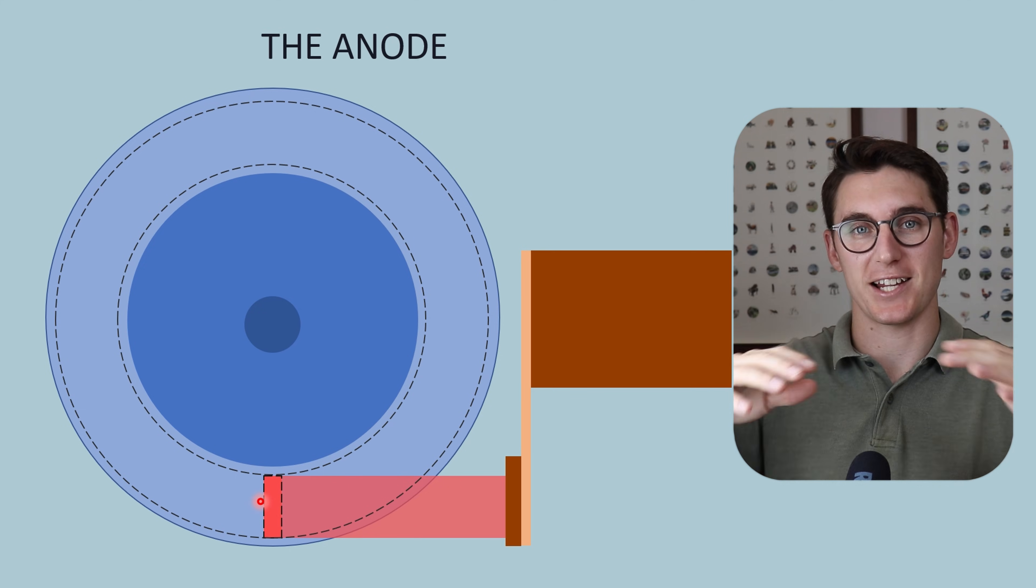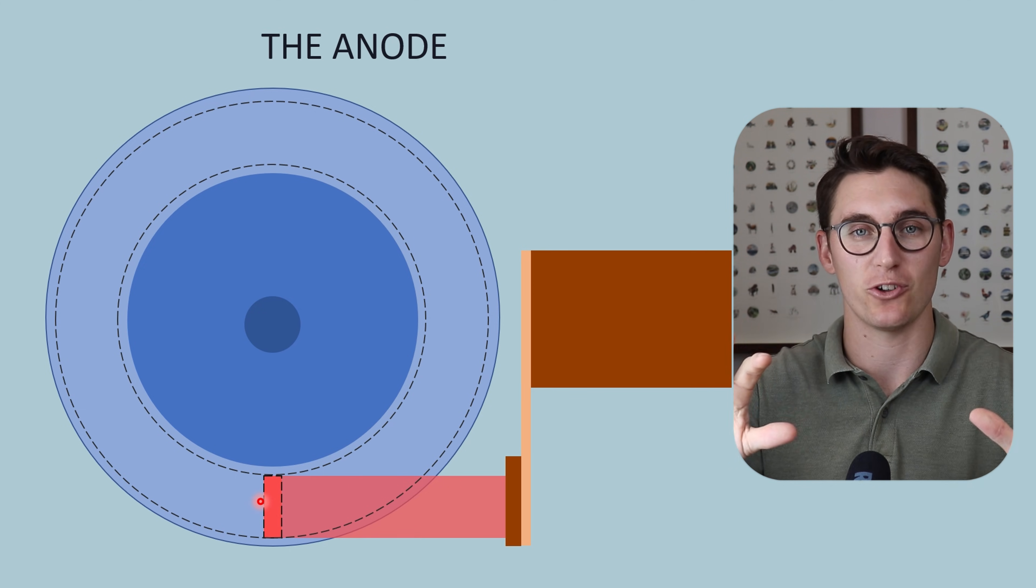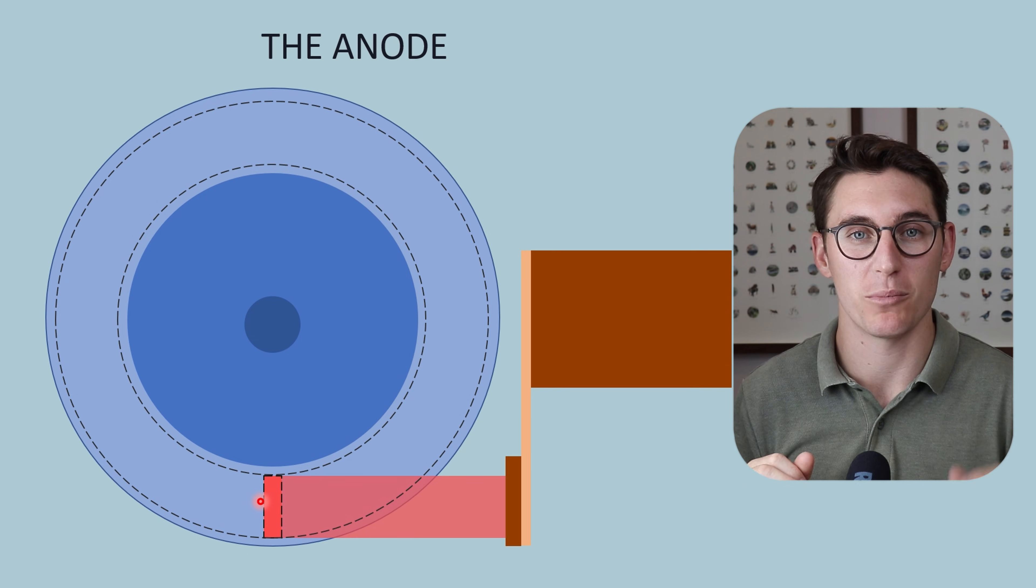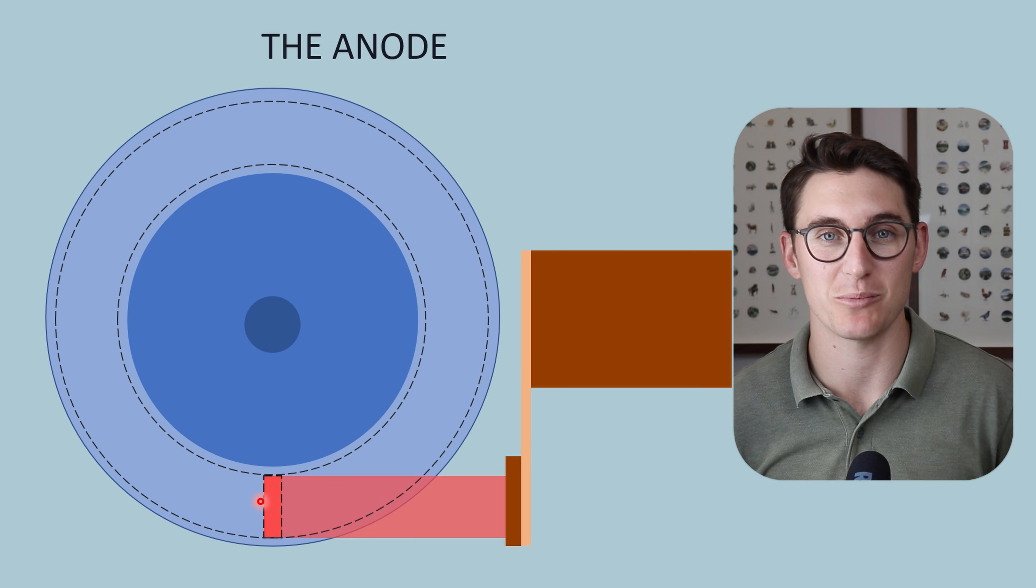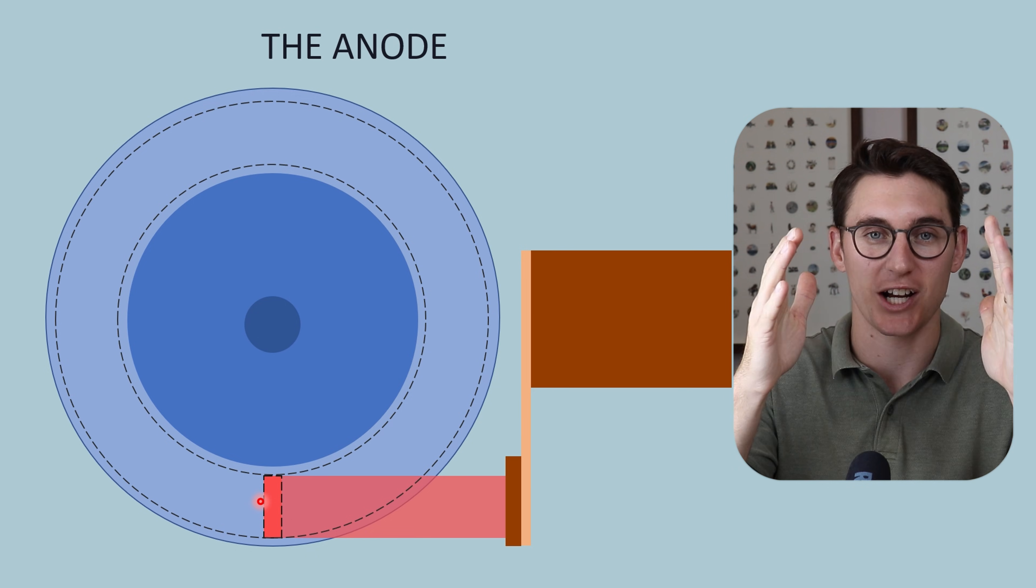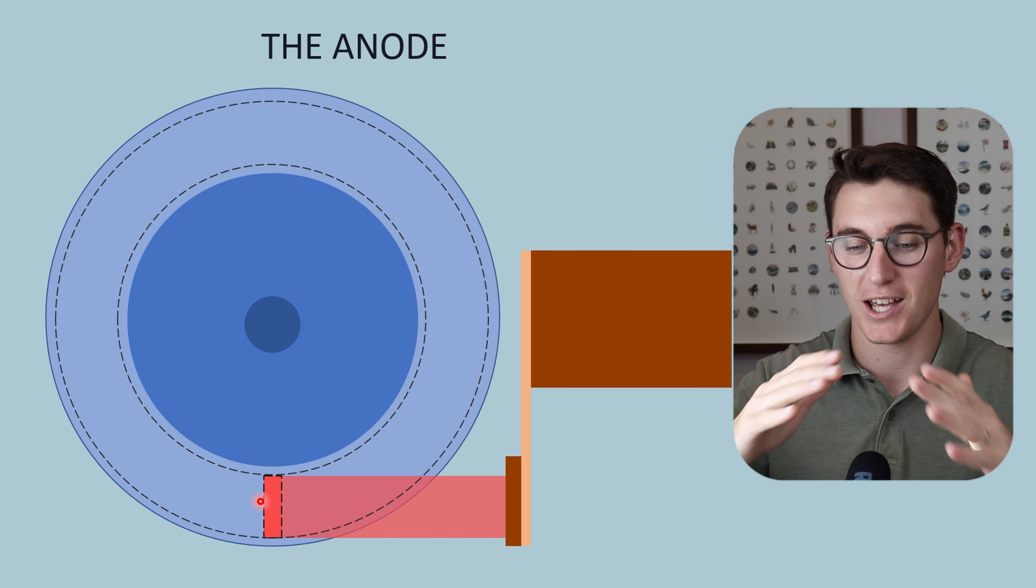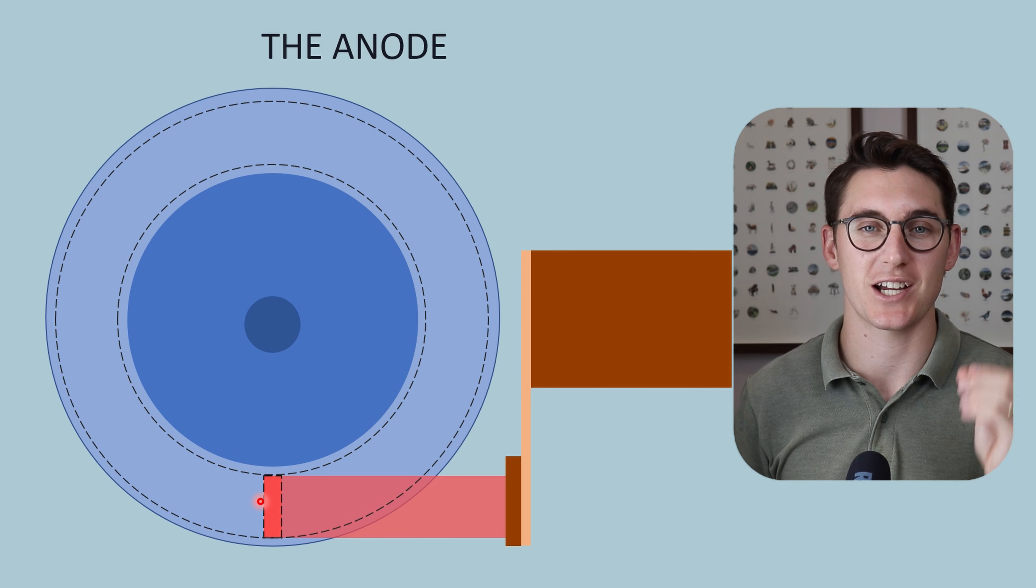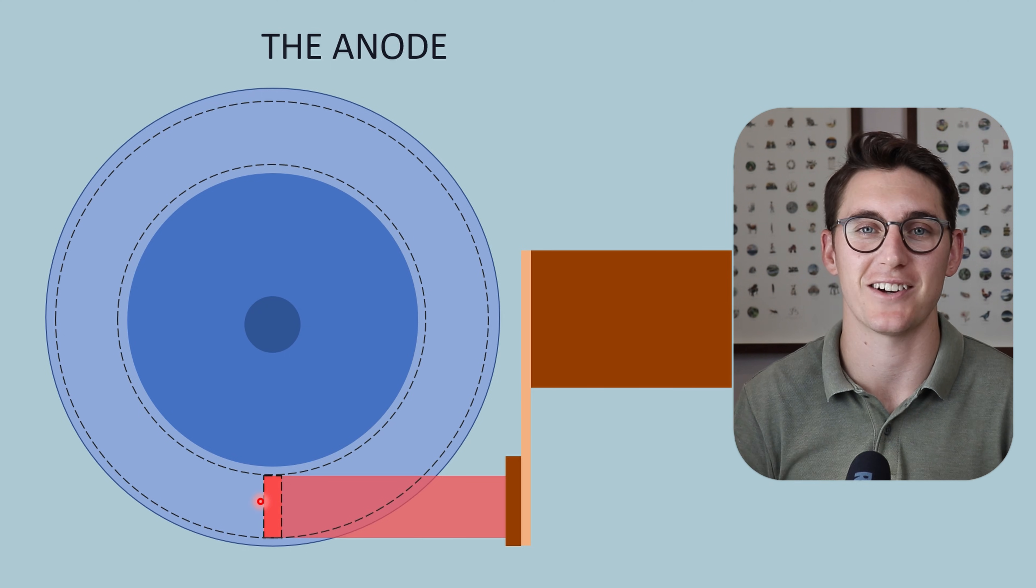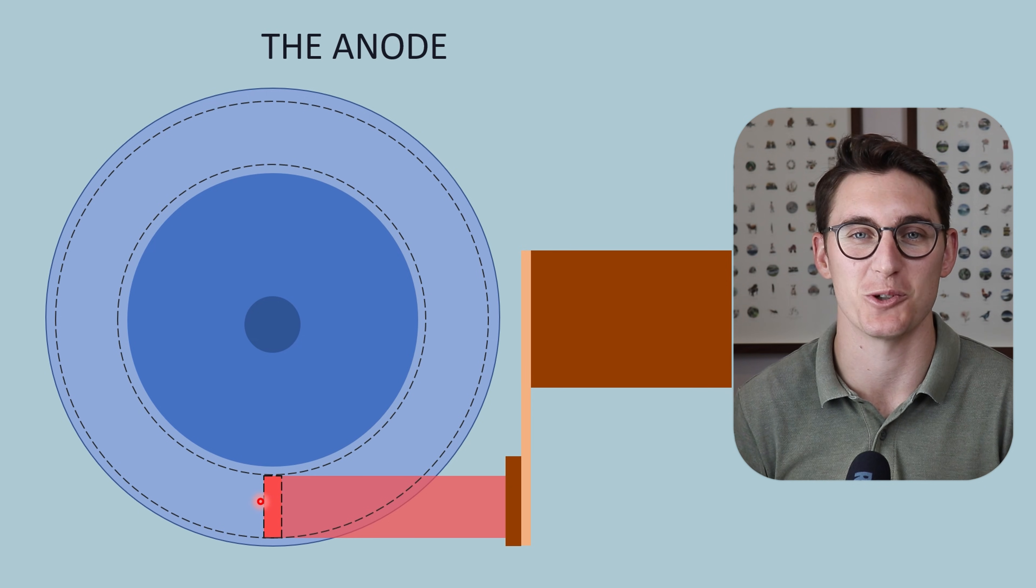We're going to take a step back now and look at the x-ray tube as a whole. The major components are the cathode and anode which we've spent time on. Now I want to tell you about the other components before heading on to x-ray beam geometry, where we look at how changing the anode angle will change our actual and effective focal spots and field size. We're going to cover the line focus principle, which is incredibly important in our x-ray physics module. I'll see you in the next talk where we look at the x-ray tube. Goodbye.